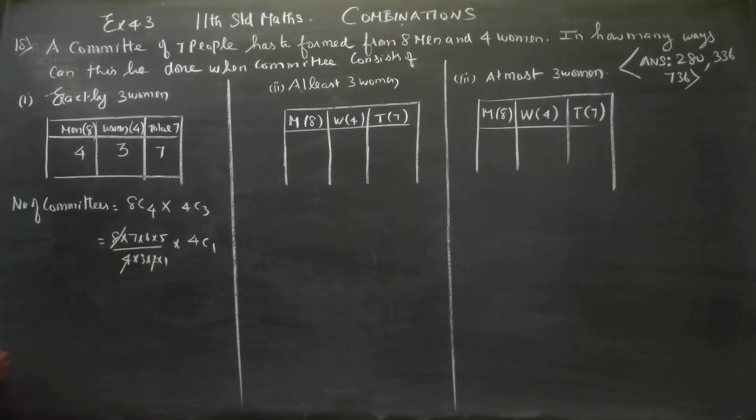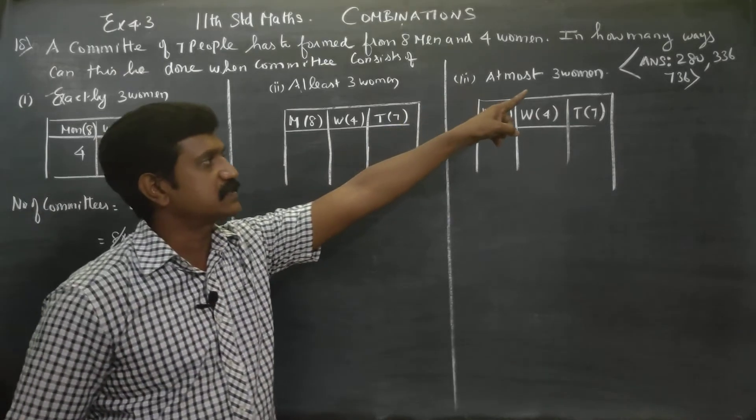This gives us 70 times 4C1, which is 4. 70 times 4 equals 280. The answer is 280 committees can be formed. That is the first answer.